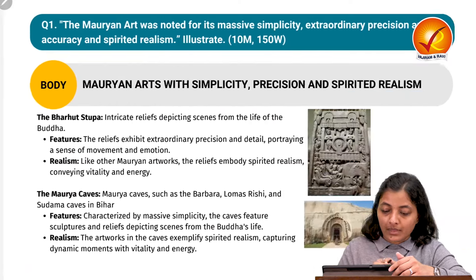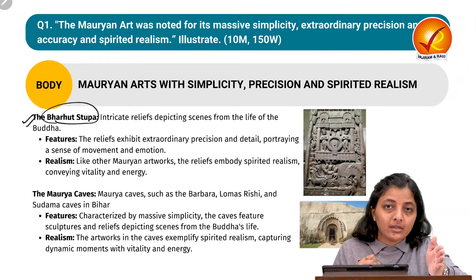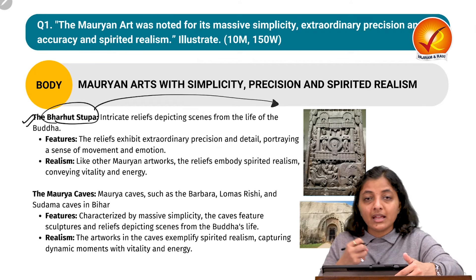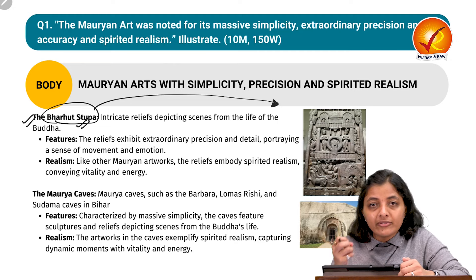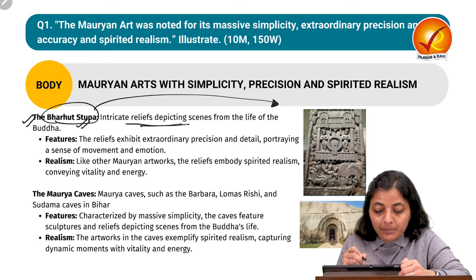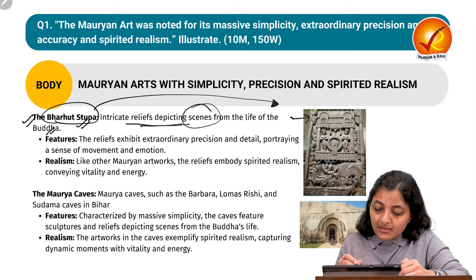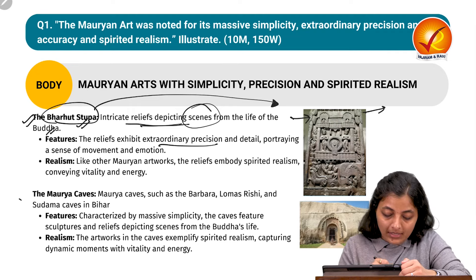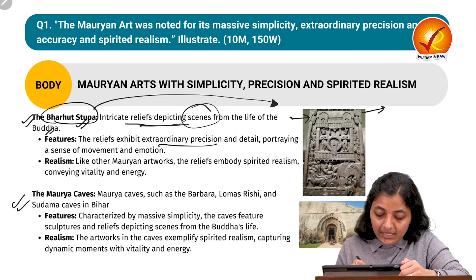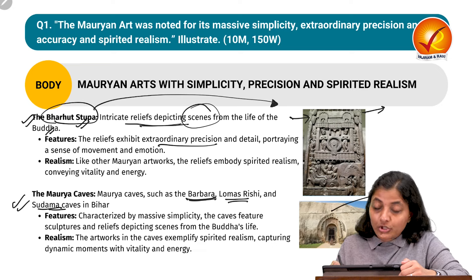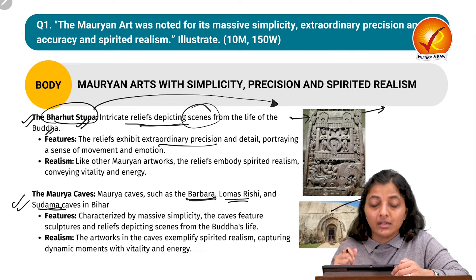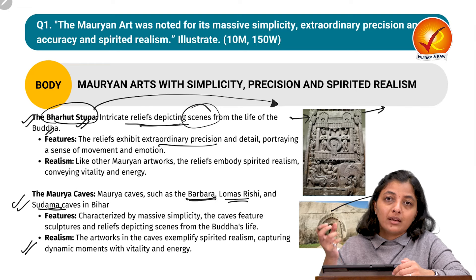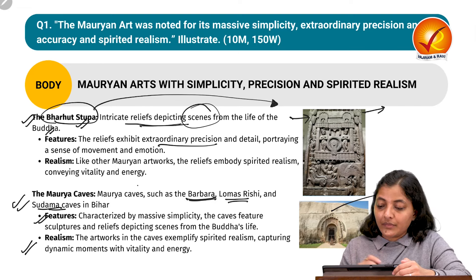Next is the Barhut Stupa. Ashoka patronized Buddhism and helped in building stupas, so Buddhist ideology is embedded in them. The Barhut Stupa has intricate reliefs depicting scenes from the life of Buddha. These reliefs exhibit extraordinary precision and detail, portraying power and narrative. Then there are Mauryan caves — Barbara Caves, Lomas Rishi Caves, and Sudama Caves in Bihar — massive, large-scale caves whose engravings and sculptures show the day-to-day life and dynamism of communities of that time.